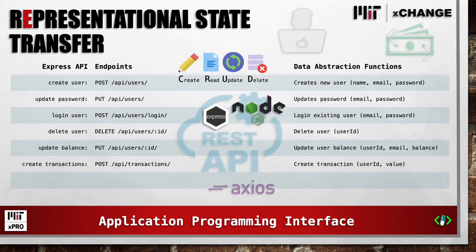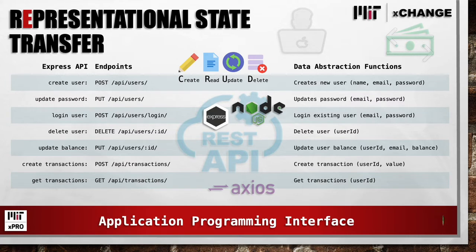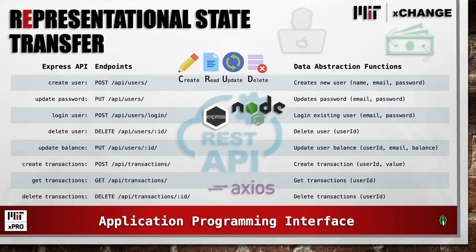Create transaction is a post route to API slash transactions using the user ID and the value. Get transactions is a get route to API slash transactions using the user ID. Delete transactions is a delete route to API slash transactions slash ID using the user ID.